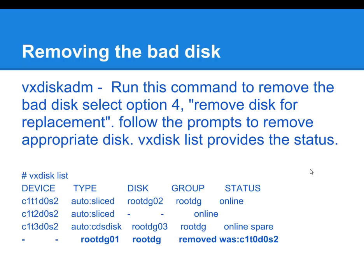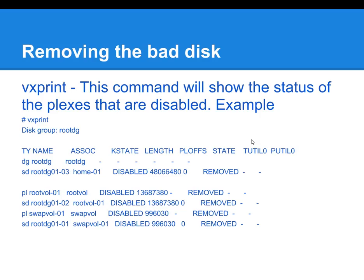You should then do a VXDisk list so that you can see the results of running the VXDiskADM command. In this example, we can see that the Veritas name for the disk, rootDG01, was removed. The actual device name is controller one, target zero, disk zero. You could also do a VXPrint command to further check the status of the plexes that were on that disk. Some information was cut out just to retain the relevant details showing that rootDG01 was removed.